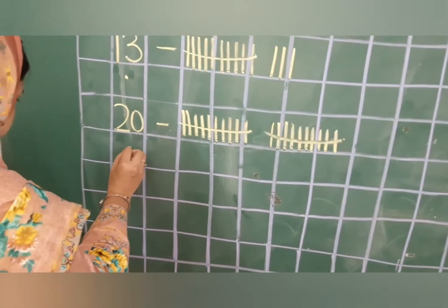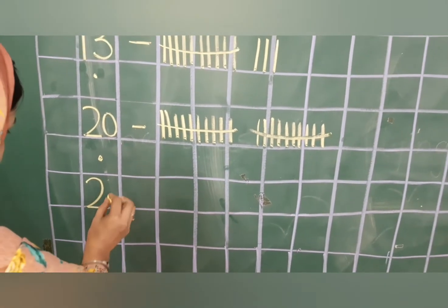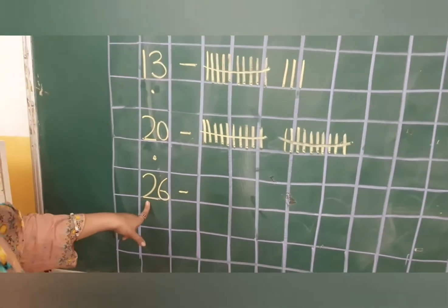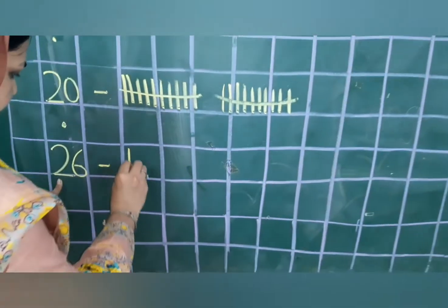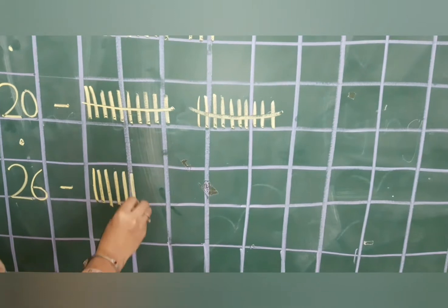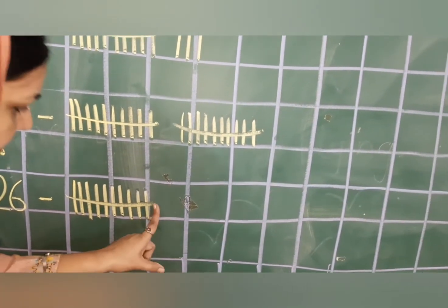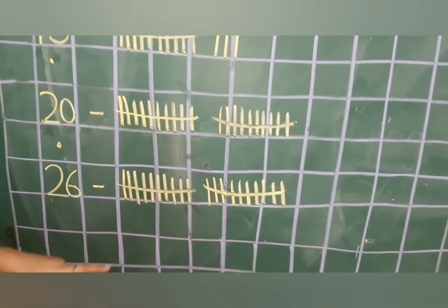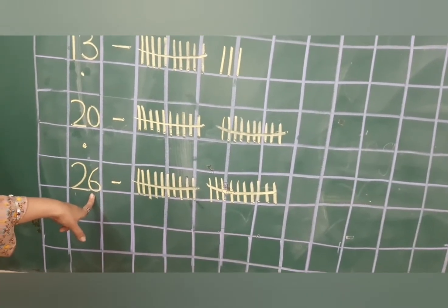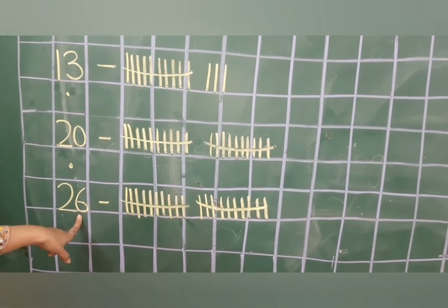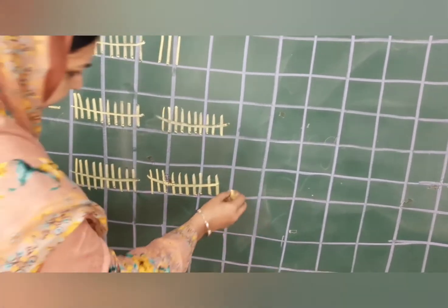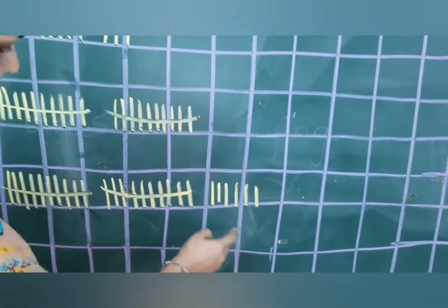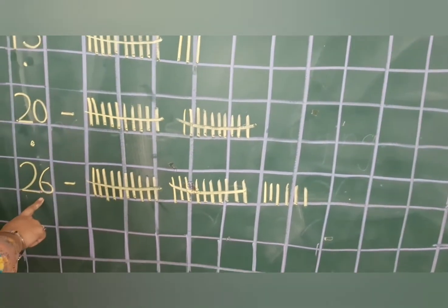Our next number is twenty-six. So what do you see on tens place? Two. That means we will make two bundles — one bundle, give one finger space, one more bundle. These are two bundles. Now which number is there on ones place? Six. That means six loose sticks — six standing lines. Again give one finger space: one, two, three, four, five and six. Two bundles and six loose sticks makes number twenty-six.